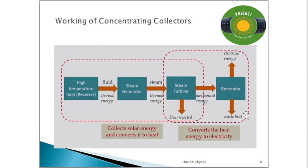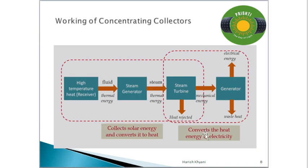Let me show the working in diagram form — this is a high temperature example. The fluid gets heated, goes to a steam generator, steam is produced, and the steam turbine is coupled with the generator to give electricity output. So the collector collects solar energy and converts it to heat, the turbine converts heat energy into mechanical energy, and the alternator converts that into electricity.